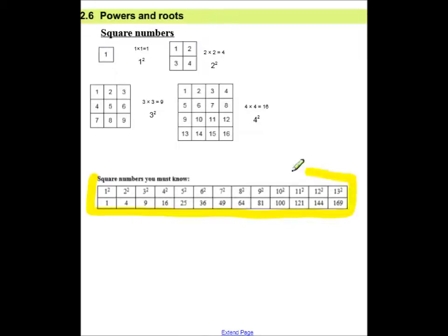It is important that you know the following square numbers, 1 to 13. That will greatly assist you. This is 1 to the power of 2, 2 to the power of 2, 3 to the power of 3, 4 to the power of 2. And those are your square numbers.